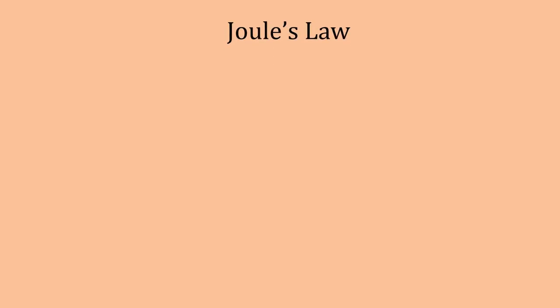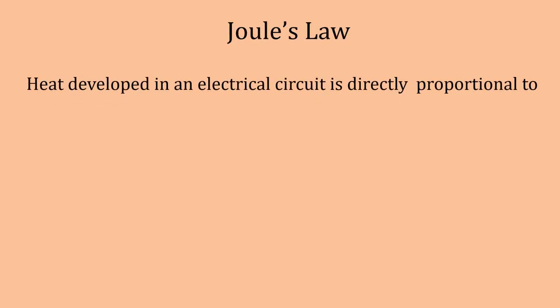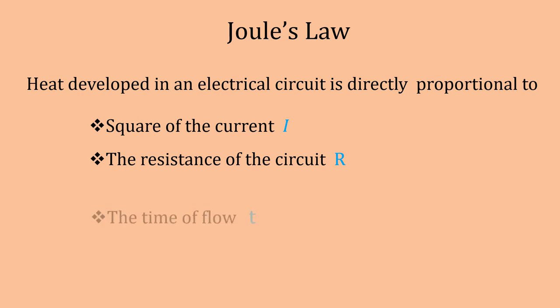Joule's Law. Heat developed in an electrical circuit is directly proportional to the square of the current, directly proportional to the resistance of the circuit and also is directly proportional to the time of flow of current. H is equal to I squared RT.